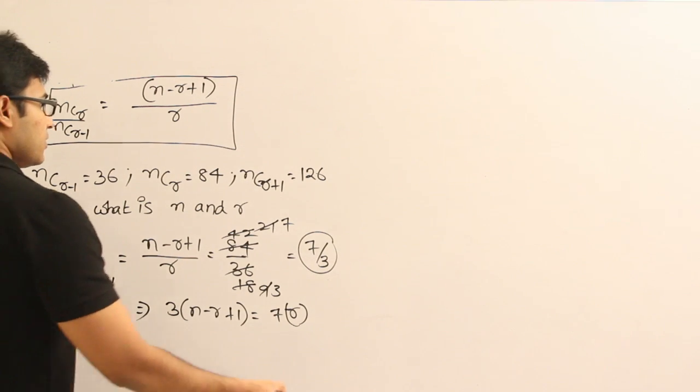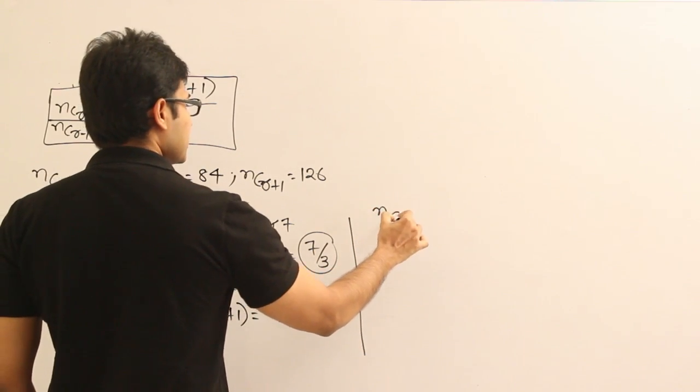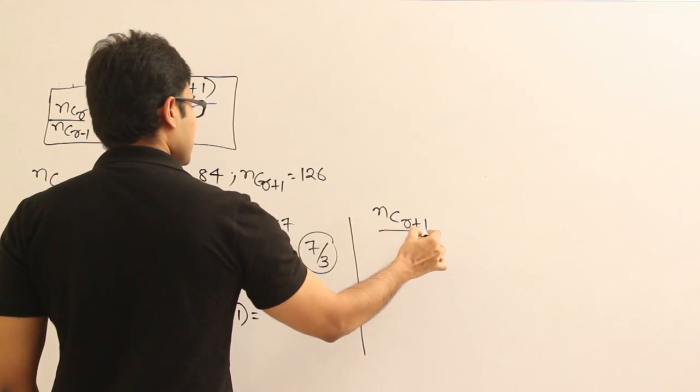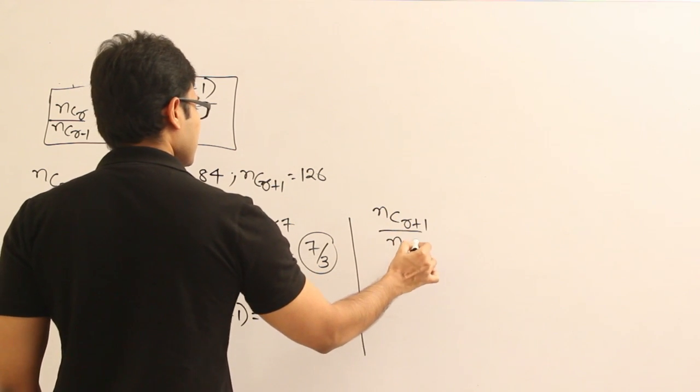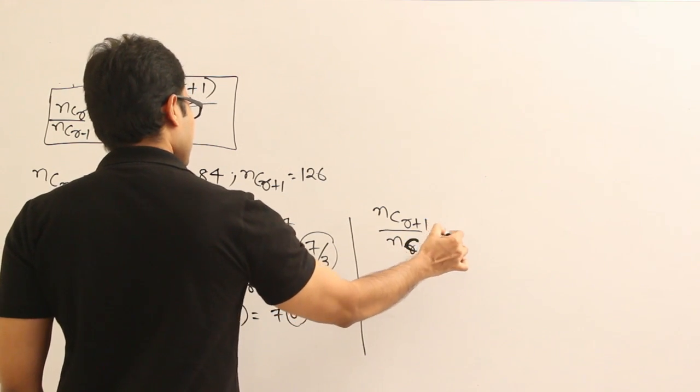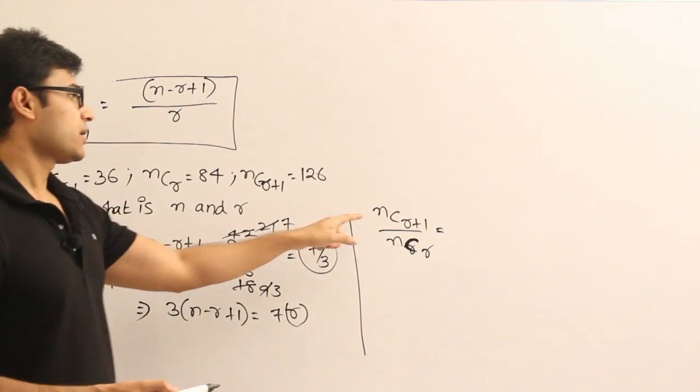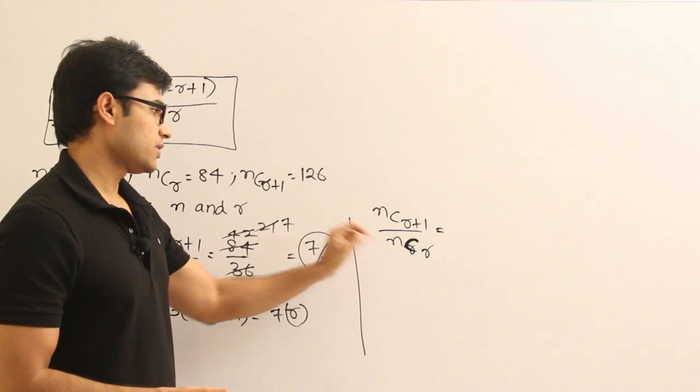And now the other one is, I can write it like this: nC_(r+1) divided by nCr. So if I write like this, you might get confused because the formula is in terms of nCr divided by nC_(r-1), but here I am taking nC_(r+1) and then nCr.